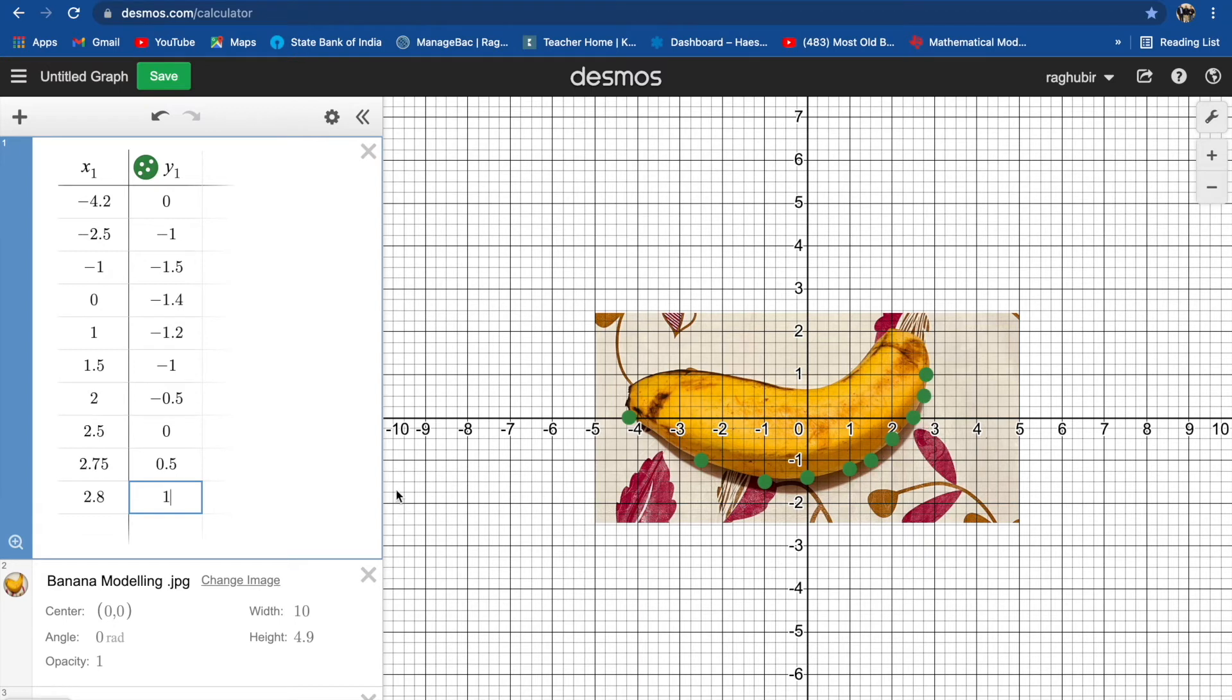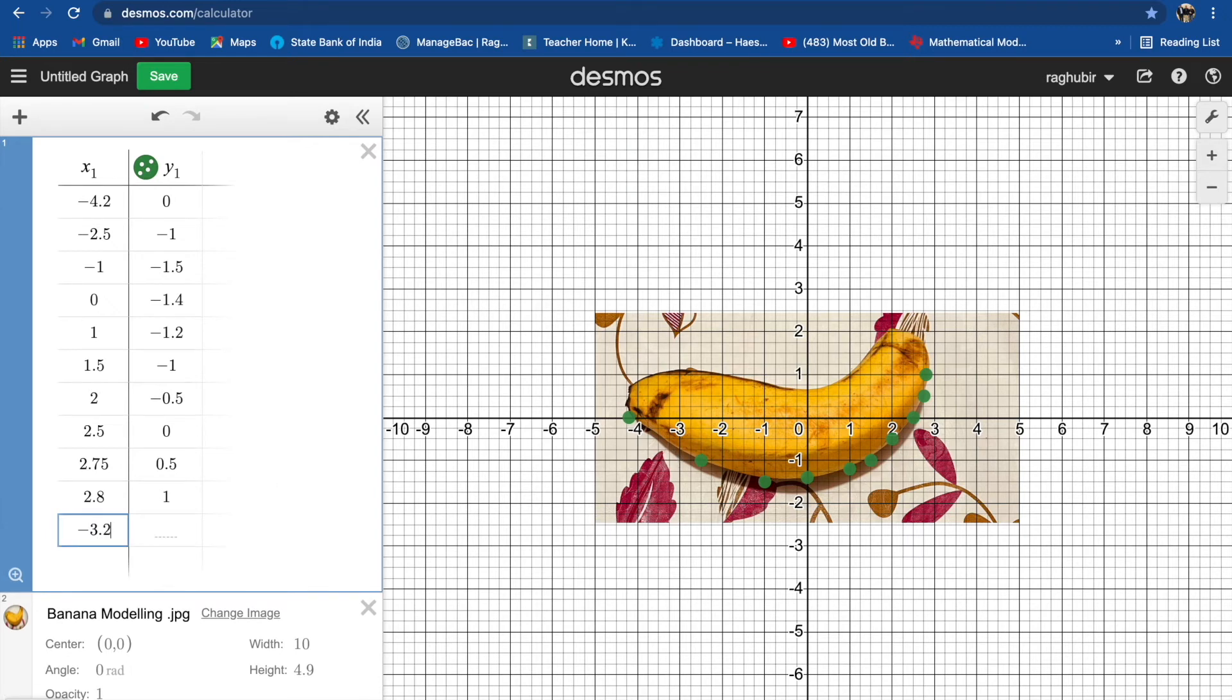So I think we have ten points now, one two three four five six seven eight nine ten. If we wish, one more point can also be like X is negative 3.25 and corresponding Y is approximately negative 0.6.